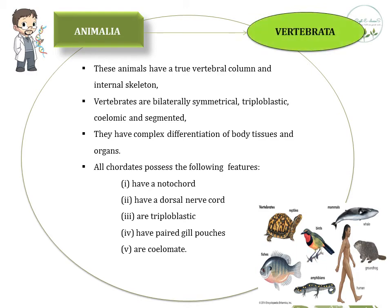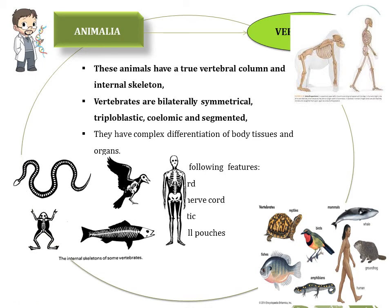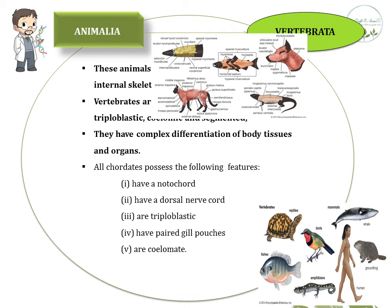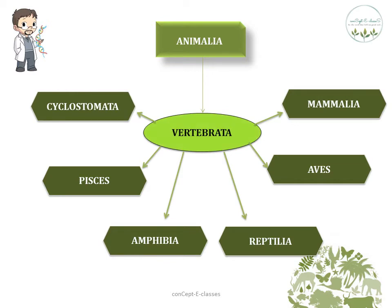The last division under kingdom Animalia is Vertebrata. These animals have a true vertebral column and an internal skeleton. Vertebrates are bilaterally symmetrical, triploblastic, coelomate, and segmented, with complex differentiation of body tissues and organs. All chordates possess the following features: a notochord, a dorsal nerve cord, paired gill pouches, and they are coelomate. Vertebrata are grouped into six classes: Cyclostomata, Pisces, Amphibia, Reptilia, Aves, and Mammalia.